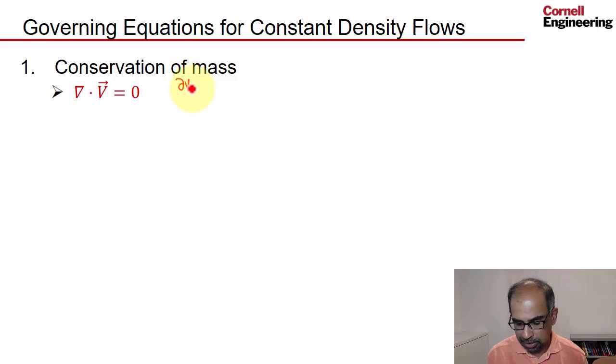dv_z by dz plus dv_r by dr plus v_r over r equals zero. Now compare this to the 2D case, which might be more familiar.